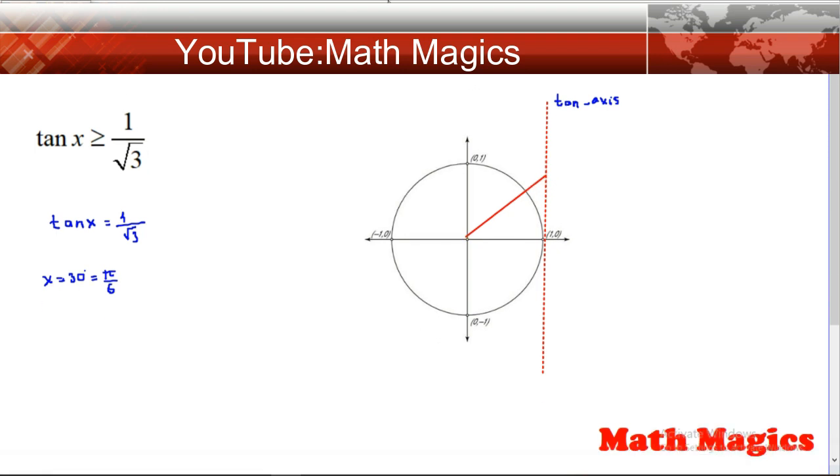First, put the value where it's equal to 1 divided by square root of 3, and we have to find the region greater than or equal to 1 divided by square root of 3.